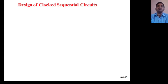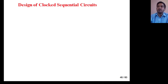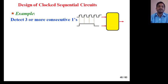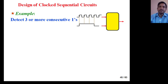Suppose you are given a state diagram and with the help of that state diagram you have to design a clocked sequential circuit. For example, suppose you have to design a sequence detector that detects three or more consecutive ones. Three or more consecutive ones means one, one, one — three ones or more — then output will be one, otherwise zero.